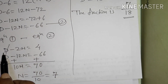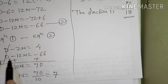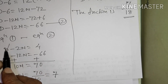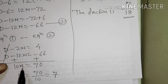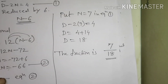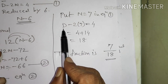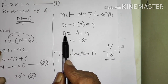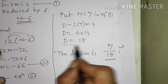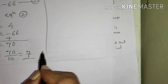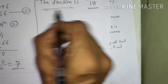Equation 1: D minus 2N equals 4. Equation 2: D minus 12N equals minus 66. Subtracting, minus 2N plus 12N gives 10N; 4 plus 66 is 70, so N equals 7. Putting N equals 7 in equation 1: D minus 14 equals 4, so D equals 18. Denominator is 18, numerator is 7 — the fraction is 7 upon 18.